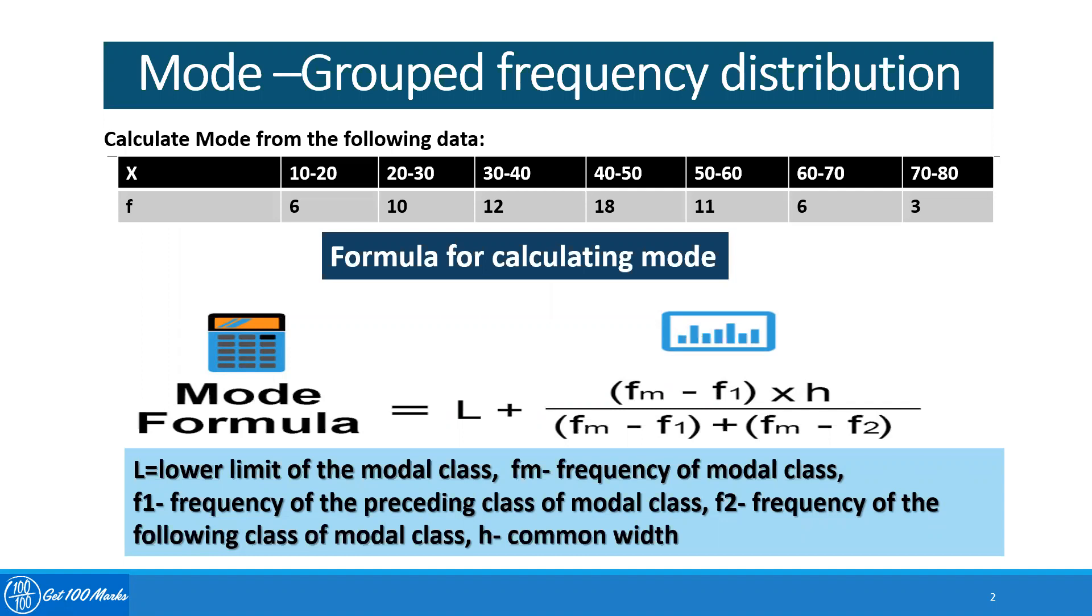and so on. The next column is frequency, which is 6, 10, 12, 18, and so on. This type of data distribution is known as a grouped frequency distribution.